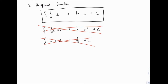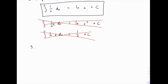So that's the reciprocal function — one special case. The next category, following along with what we learned with derivatives, is exponential functions. Just like with derivatives, this is nice and easy because the derivative of the natural exponential function e to the x is itself — that's the easiest derivative of all. So it's also the easiest integral: the integral of e to the x is just e to the x plus c.